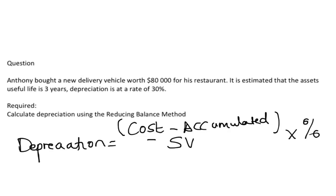Anthony bought a new delivery vehicle worth $80,000 for his restaurant. The asset's useful life is estimated at 3 years and depreciation is at a rate of 30%. We need to calculate depreciation.